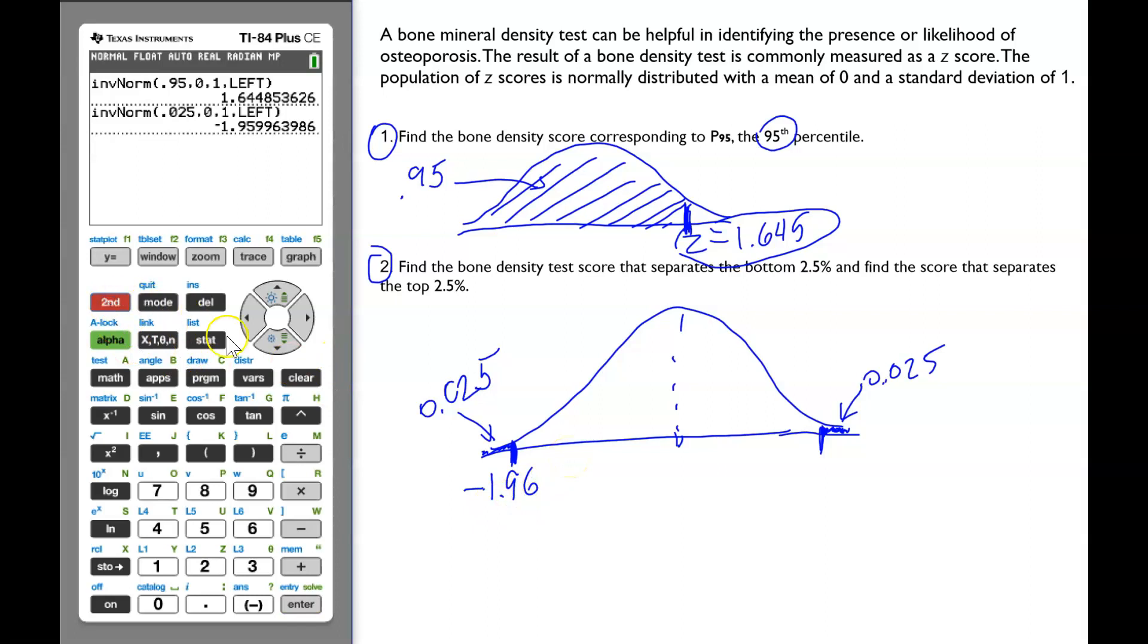Go to 2nd, VARS, invnorm, enter. Now, we're going to change it to area or tail to the right. Enter. 1.96. We were right.